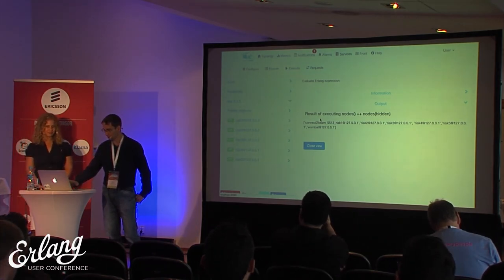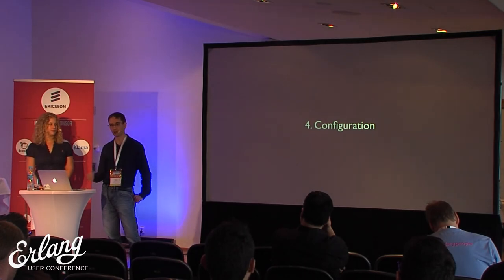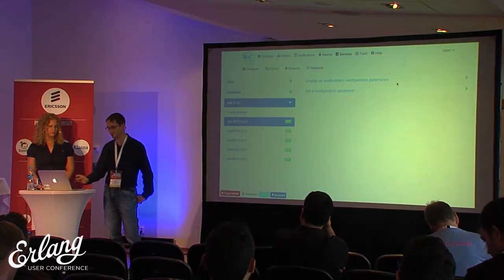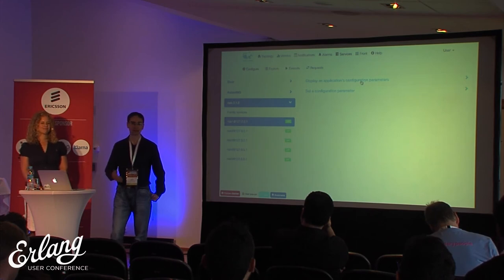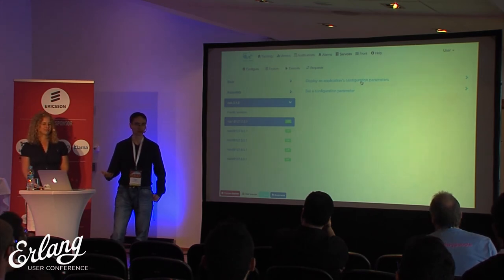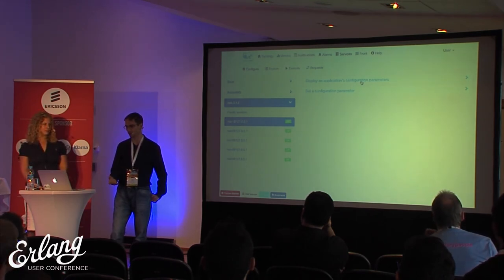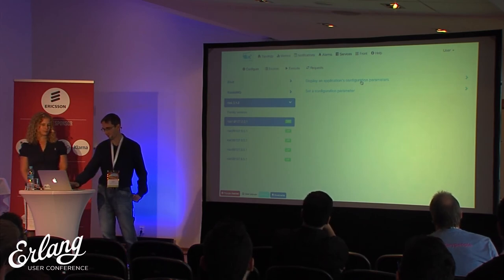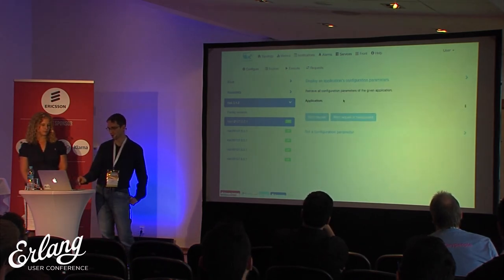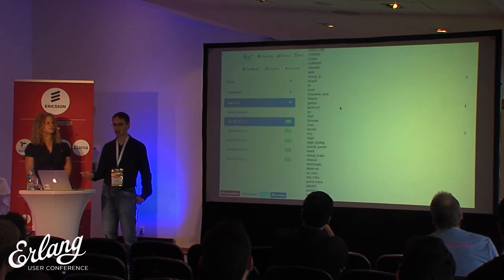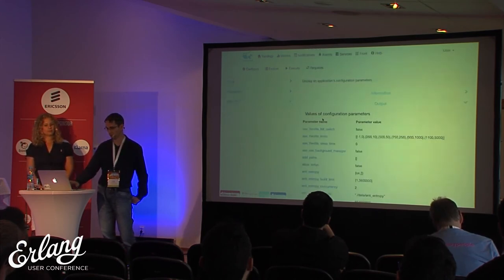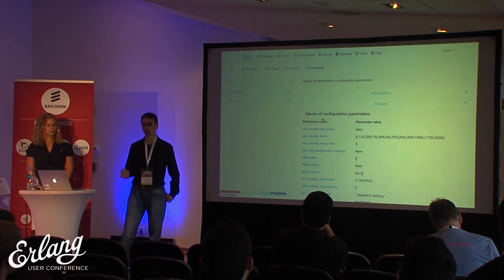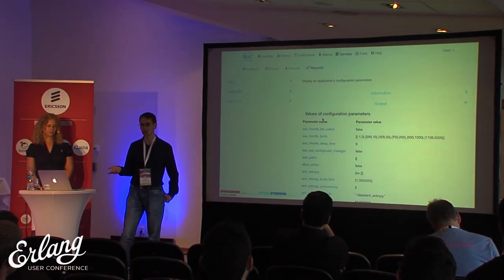The last thing I'd like to mention is configuration. In Erlang we usually use configuration parameters to customize our nodes. Here if I select the Riak node and inside that select the application I'm interested in — which is riak_kv in this case — I will get a list of all the configuration parameters and their values.